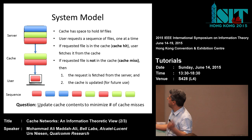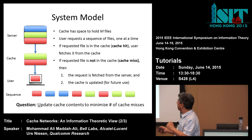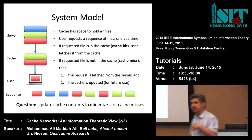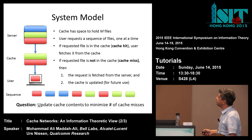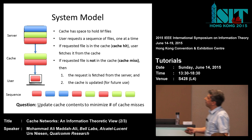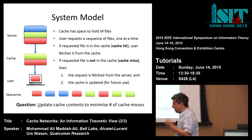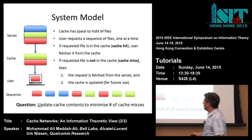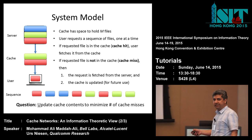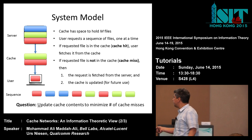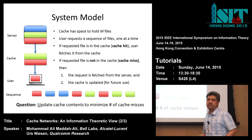We have two cases: cache hit and cache miss. For cache hit, we just fetch it from the cache. For cache miss, we need to update the cache and fetch the file from the server. Our target is to find an algorithm to update the cache such that the number of cache misses is minimum.